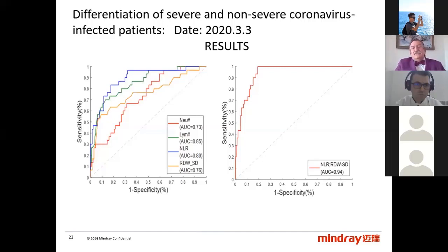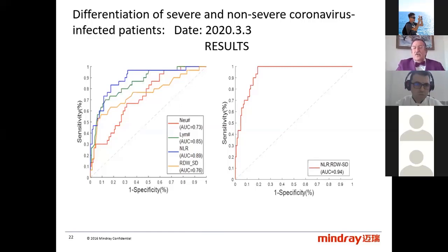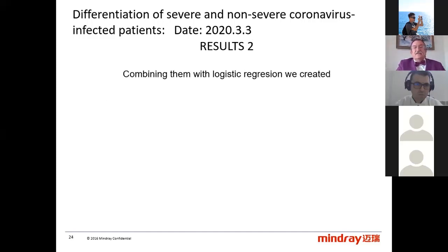We can measure the NLR every day, and sometimes it's much more significant to see the evolution of NLR and this formula than a single value if we don't have a previous one. For me, it will be more important than a single measurement to see the follow-up of this flag, which will indicate severity — whether the patient is going better or worse. The results confirmed the first case: lower lymphocytes, higher neutrophils in the severe patients, suggesting bacterial sepsis co-infection. It is possible to combine both with the NLR formula. The cutoff — which is patent pending — is more than 1.06.